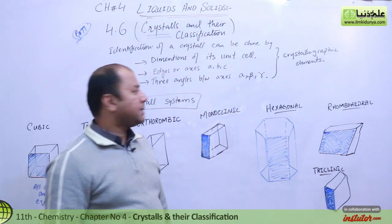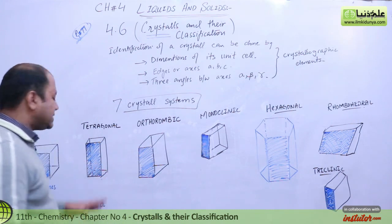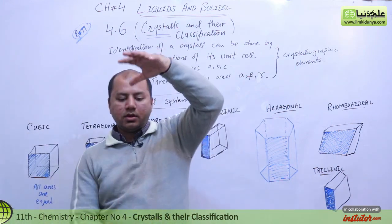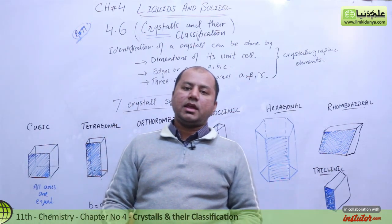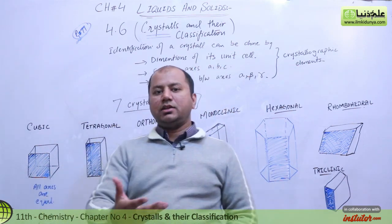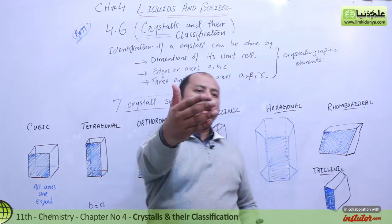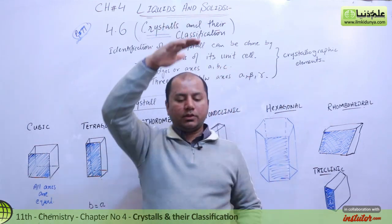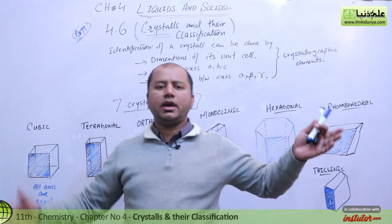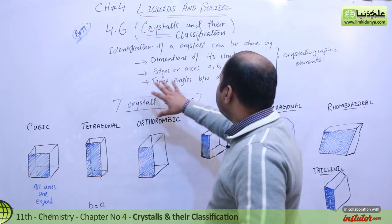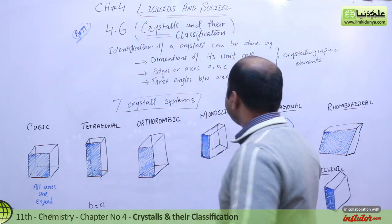Now students, we also study edges and axes in crystallography. We have three sides of any unit cell, known as A, B, and C. A represents the front-to-back direction, B the upper-to-lower direction, and C the left-to-right side. So there are three total axes: A, B, C. We also have three angles between the axes: alpha, beta, and gamma.